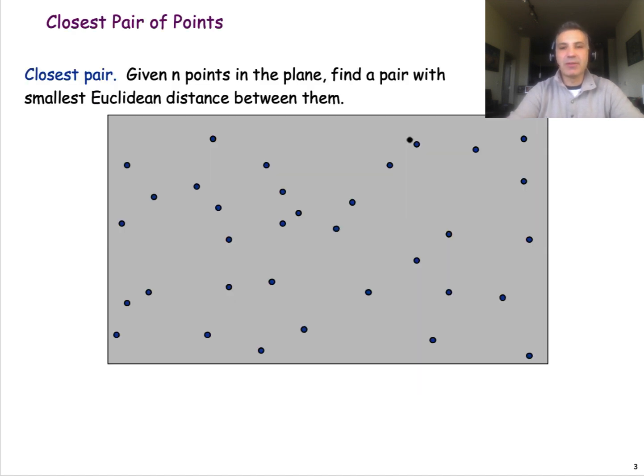The problem itself is very simple. Imagine that we have the two-dimensional plane, the Euclidean plane, and somebody gives us n points. We want to find the pair of points that are closest together, at the smallest Euclidean distance between them.